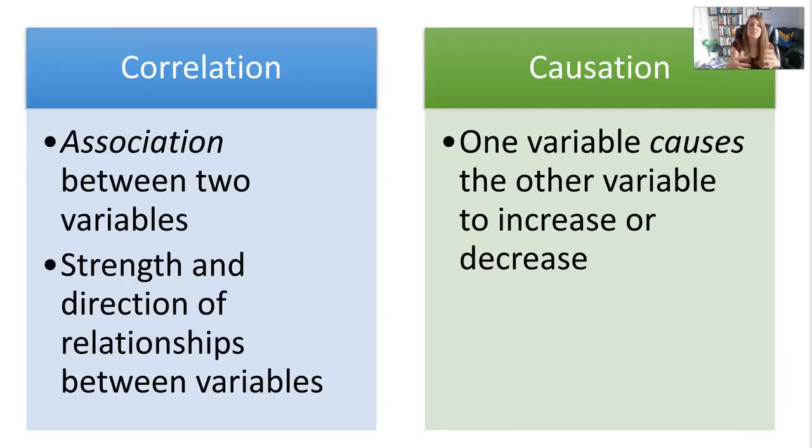Correlation again is that association between two variables and it looks at that strength and direction of those variables and their relationship, whereas causation is one variable causing the other variable to increase or decrease.